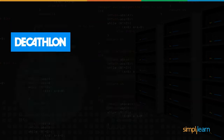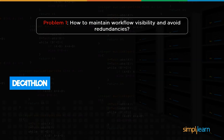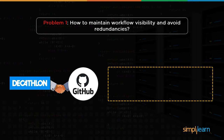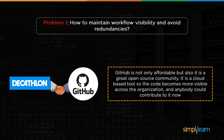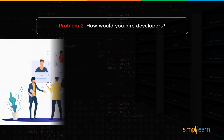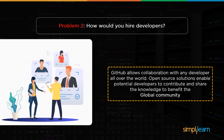Let's see how Decathlon solved these two problems. In the first case, the entire Decathlon shifted from any other remote repository to GitHub. GitHub turned out to be an amazing open source community, as the code became more visible across the organization and anybody could contribute to it. For the second case, since GitHub is an open source community, it helped in collaboration with any developer all over the world, and potential developers could contribute to benefit the global community.